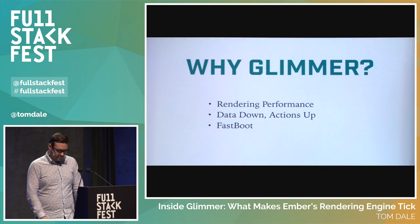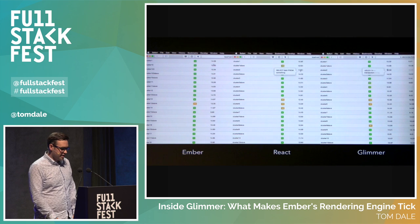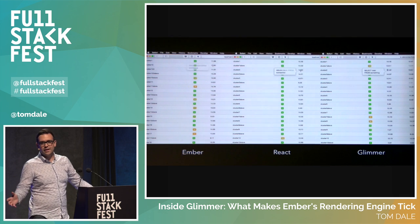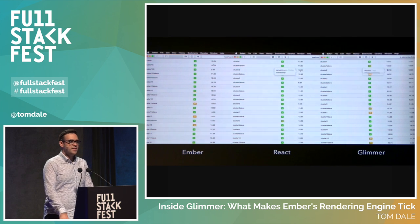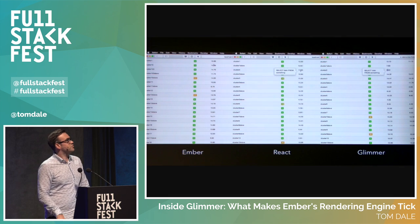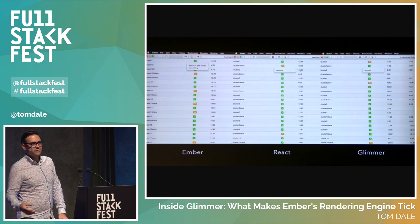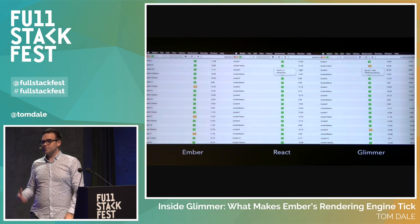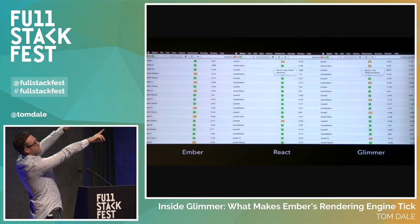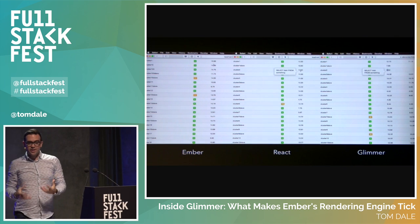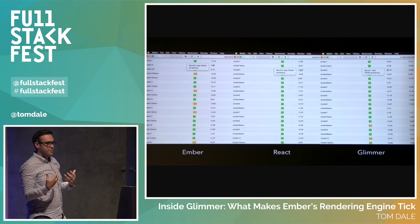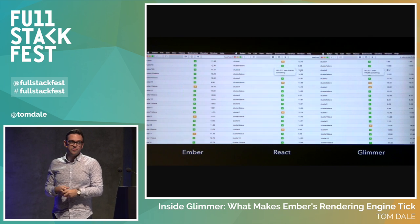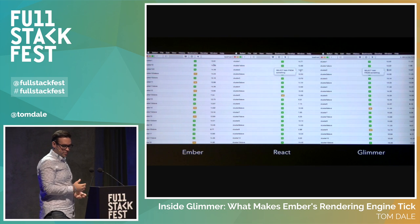Talking about rendering performance: Ryan Florence gave a talk at React Conf and basically embarrassed Ember because he showed an application called DBMon — he had tried to build it in Ember and it was really slow, then built it in React and it was fast. This slide shows pre-Glimmer Ember on the left, React in the middle, and Glimmer on the right. What's really interesting is that the two Ember apps on either side are the exact same application — all that changed is it's running the new rendering engine. We could bring really amazing performance improvements to apps that were even a few years old, which I think is incredible.